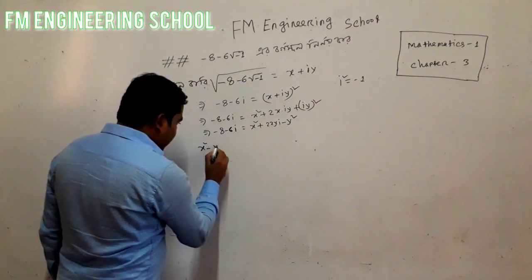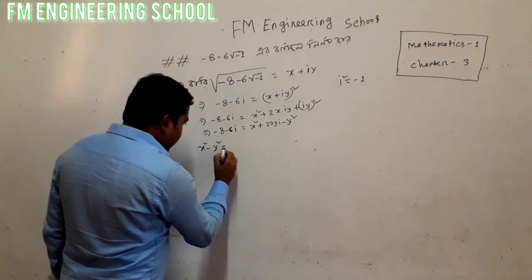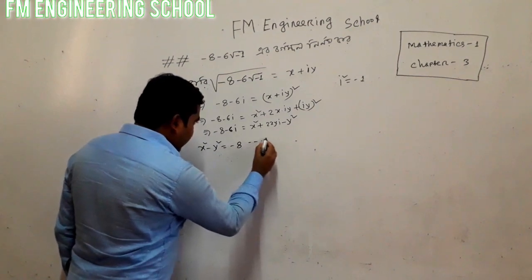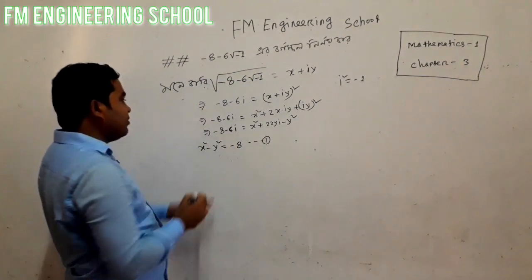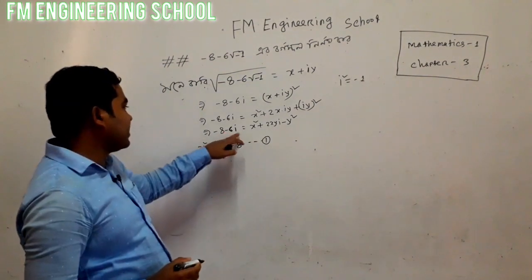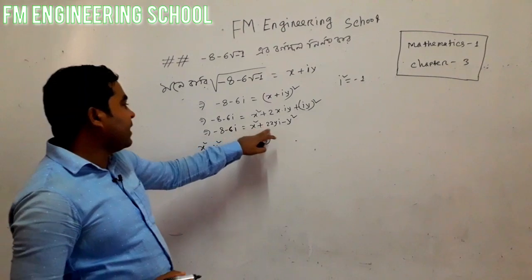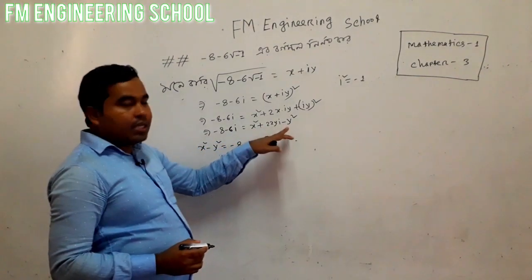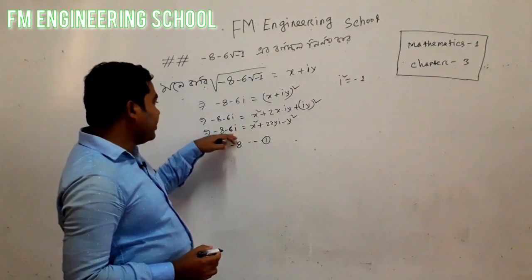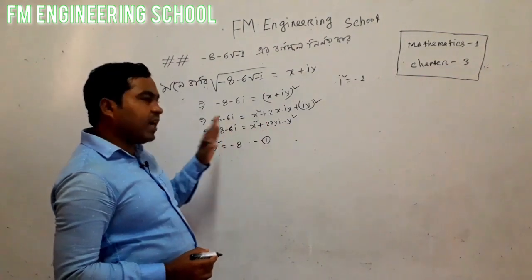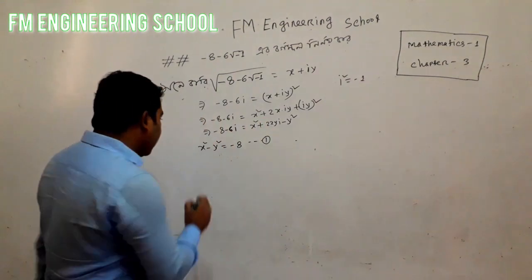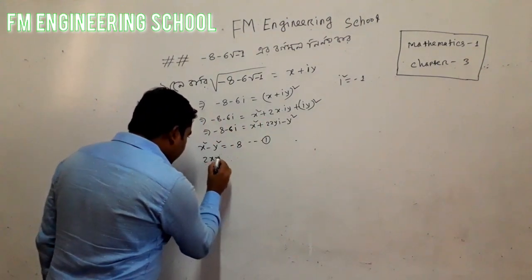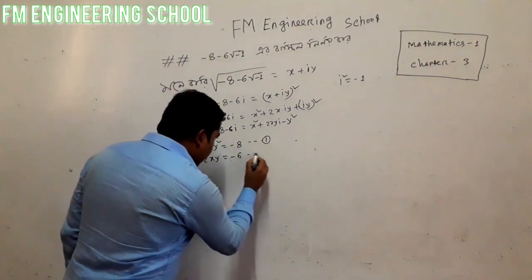So here, comparing both sides: the real part gives us x squared minus y squared equals minus 8, and the imaginary part gives us 2xy equals minus 6.